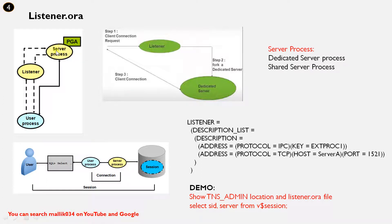Once the request is processed, the result is given back to the server process, then back to the user process, and then the result is displayed to the user. There are two kinds of server process: dedicated server process and shared server process.